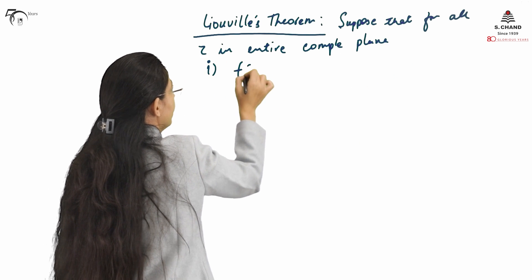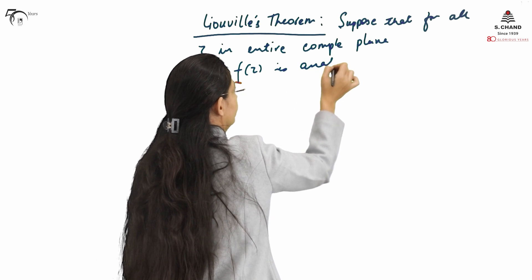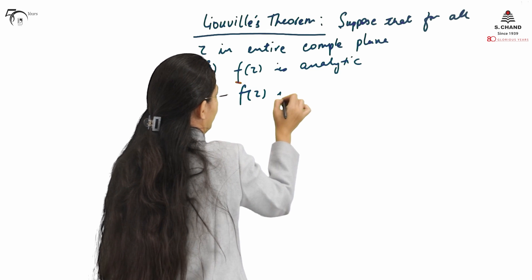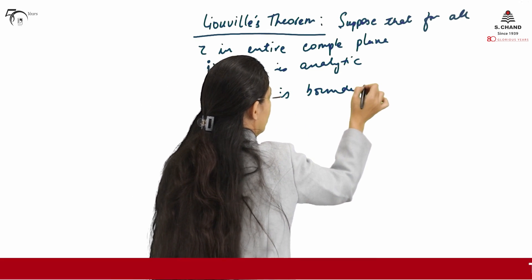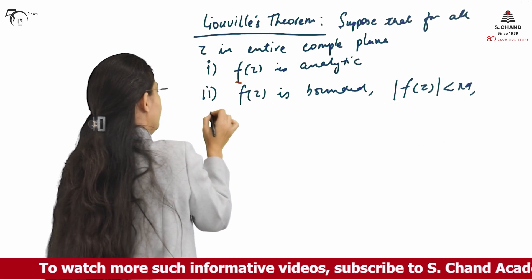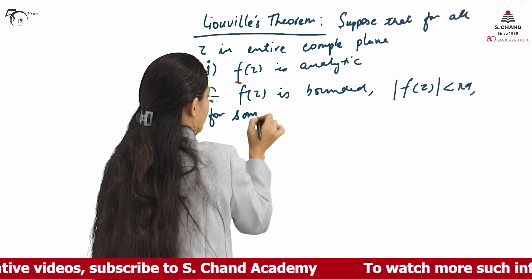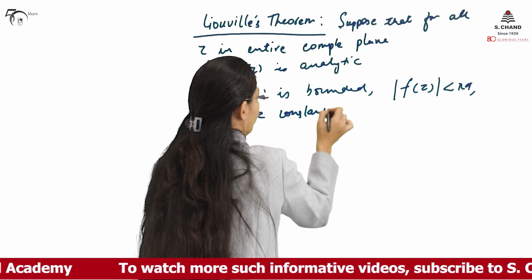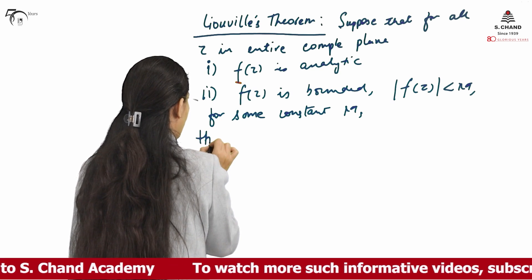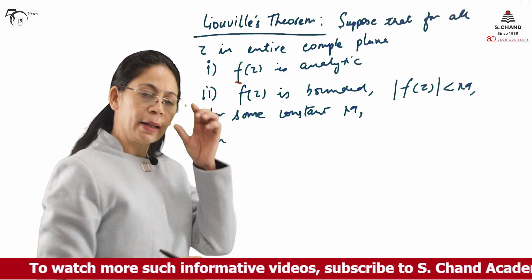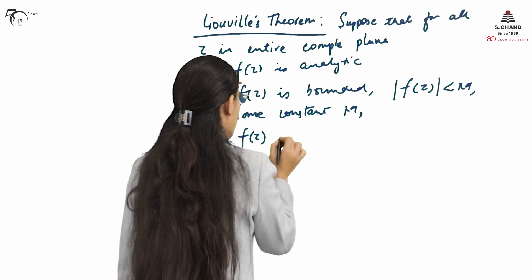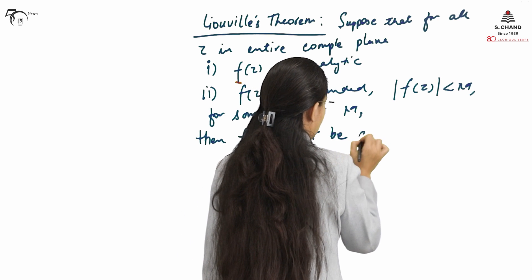Liouville's Theorem says that suppose, for all z in the entire complex plane: condition 1 — F(z) is analytic; and condition 2 — F(z) is bounded, meaning we can represent it as mod of F(z) is less than some constant M. If both conditions are satisfied, that is F(z) is analytic and F(z) is bounded, then F(z) must be a constant function.